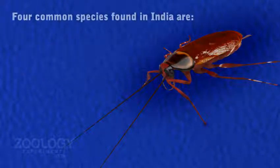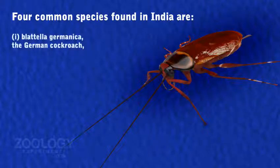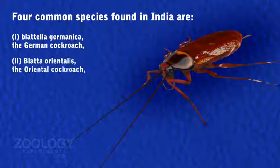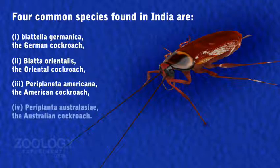In India, four types of cockroaches are found: 1. Blatella Germanica, the German cockroach. 2. Blatta Orientalis, the Oriental cockroach. 3. Periplaneta Americana, the American cockroach. And 4. Periplaneta Australasiae, the Australian cockroach.